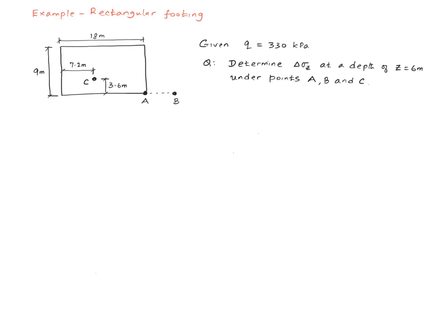Here is an example. We have a rectangular footing, and the footing pressure is 330 kPa. We are interested in finding the change in vertical stress below points A, B, and C. A happens to be at one of the corners of the rectangle, B is outside the rectangle, and C is inside the rectangle. We would like to find the change in stress at a depth of 6 meters.